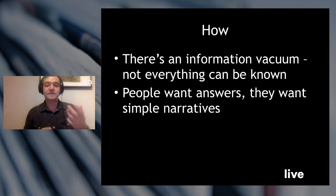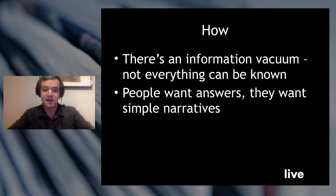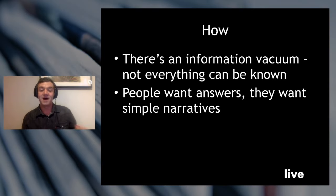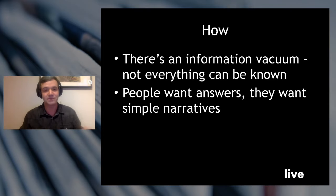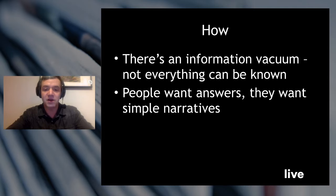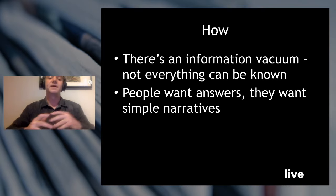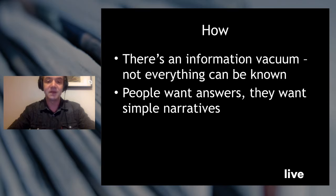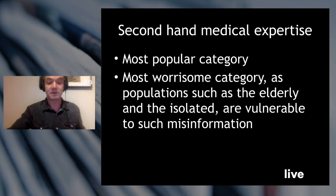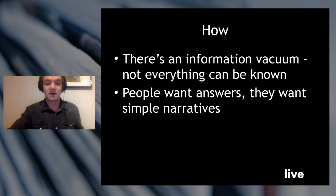The way information is able to spread so quickly right now is that there's an information vacuum — not everything can be known. People really want to know everything, and in anxious situations they want simple narratives and easy answers. People are probably more willing than usual to listen to easy answers right now, and a little more vulnerable when not everything is known and there's a lot of uncertainty about how things are going to go down around the world.